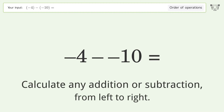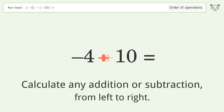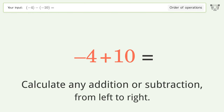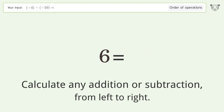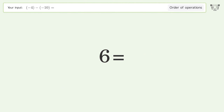Calculate any addition or subtraction from left to right. Minus and minus make a plus. Negative 4 plus 10 equals 6, and so the final result is 6.